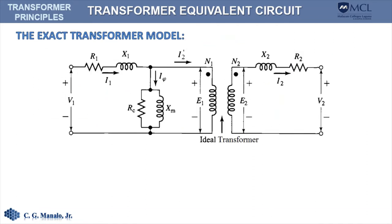Here is the complete model of the transformer, which is also called the exact transformer model. We have combined the effects of the core loss and the magnetizing current into a single shunt circuit. That circuit will draw a current I sub P, which is actually the exciting current. Now because of the presence of the core loss and magnetizing current model, the current here is not anymore I sub 1, but a different current. So we relabeled this with a current I sub 2 prime.